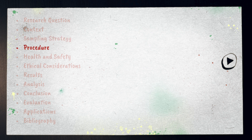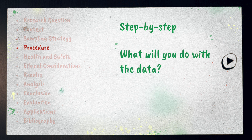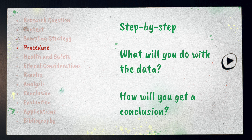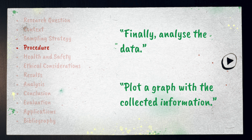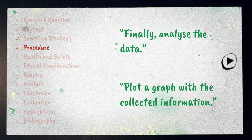The procedure could be a step-by-step series of instructions on how you carry out your investigation. It's important that you include information on what you intend to do with your data — basically, how will you get a conclusion from what you've collected? I've often seen procedure sections end with a final step that says something like 'finally, analyze the data' or 'plot a graph with the collected information' and then nothing more. This isn't sufficient because how you will analyze the data or how you will use the graphs you plot should be detailed in the procedure.